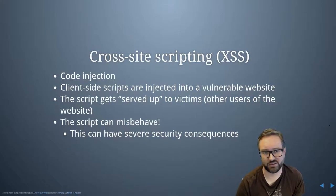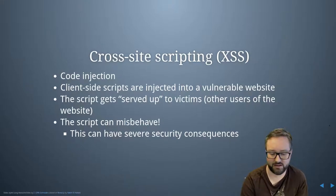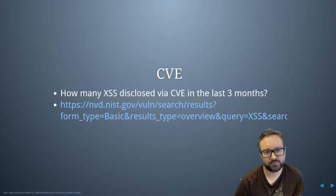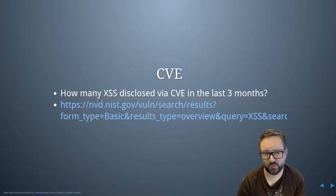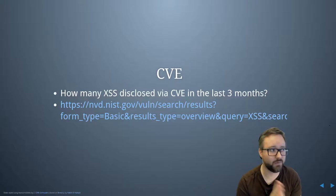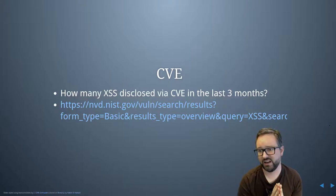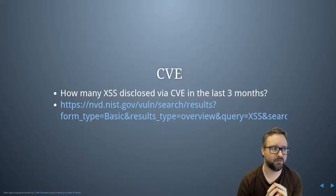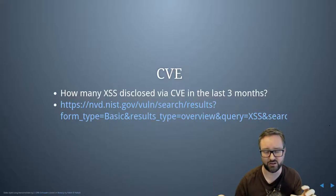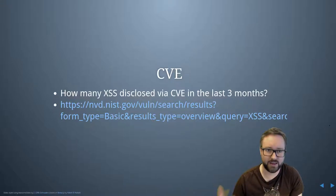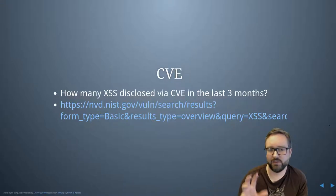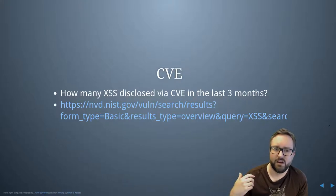This can have severe security consequences, which we'll talk about. CVEs — which we've covered elsewhere — the Common Vulnerabilities and Exposures system, is a way that publicly disclosed vulnerabilities, or those in the process of being publicly disclosed, are given a tracking number.